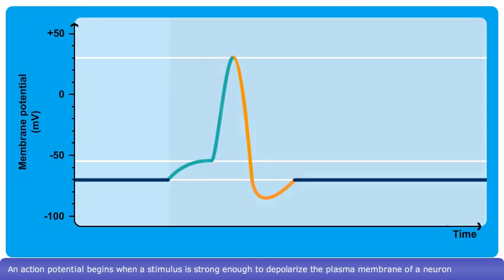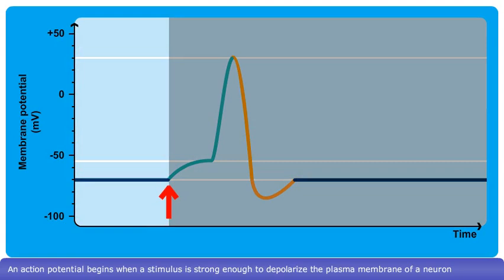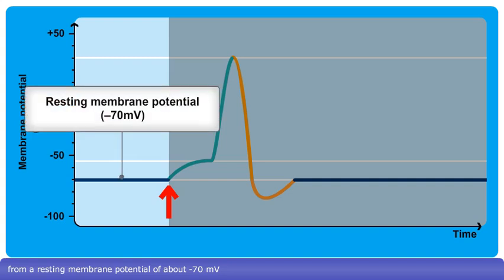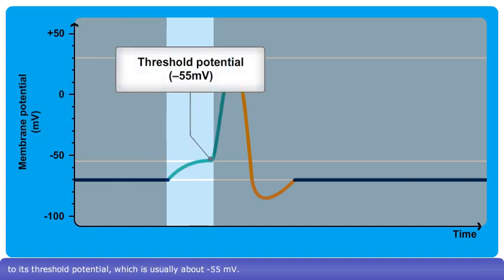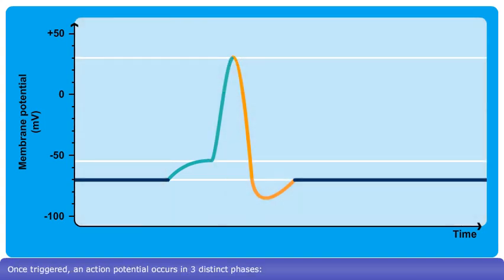An action potential begins when a stimulus is strong enough to depolarize the plasma membrane of a neuron from a resting membrane potential of about minus 70 millivolts to its threshold potential, which is usually about minus 55 millivolts.